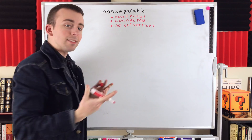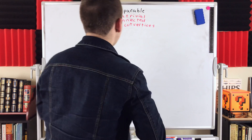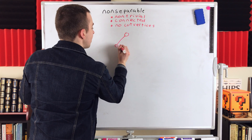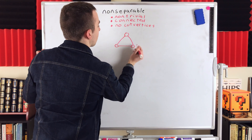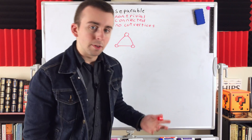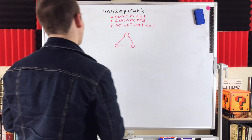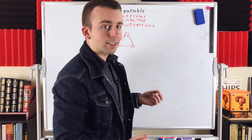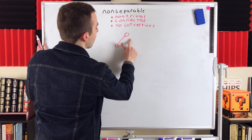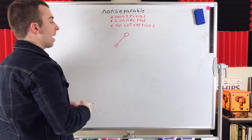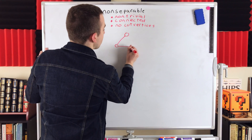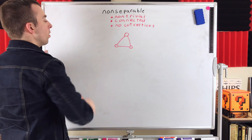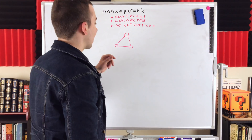Here's a very nice example of a non-separable graph. This is the complete graph on three vertices, or a three-cycle, whichever way you like to think about it. Deleting any one of these vertices does the exact same thing — it just leaves us with a pair of adjacent vertices. So this graph is non-separable because it is non-trivial, meaning it's got more than one vertex, it's connected, and it has no cut vertices. There's no vertex we can delete that disconnects the graph.